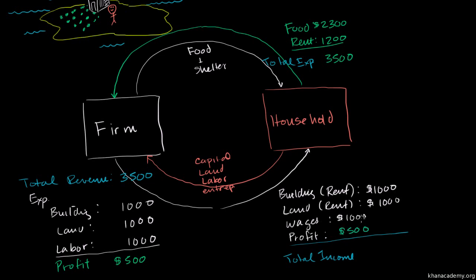So his total income is $3,500. It's good that his income is $3,500, because that's how much he's spending per year. Now the whole reason I did this is to show you the circular flow of goods and services.